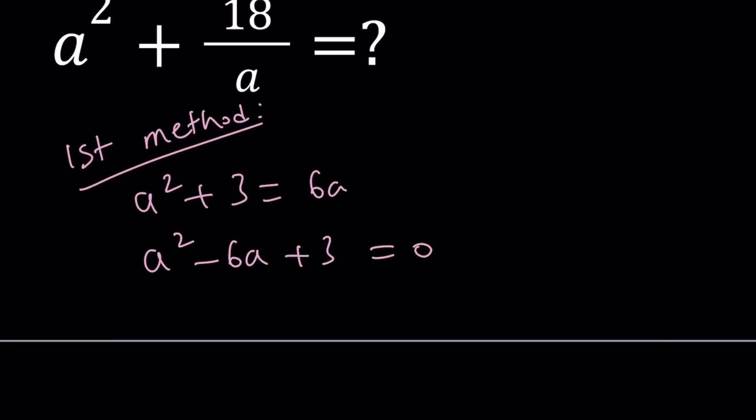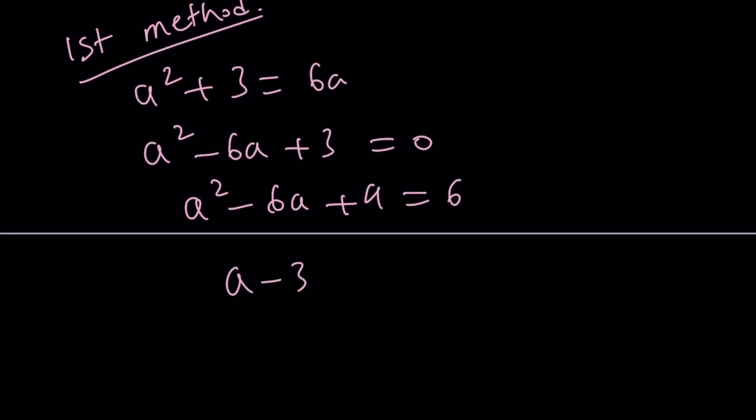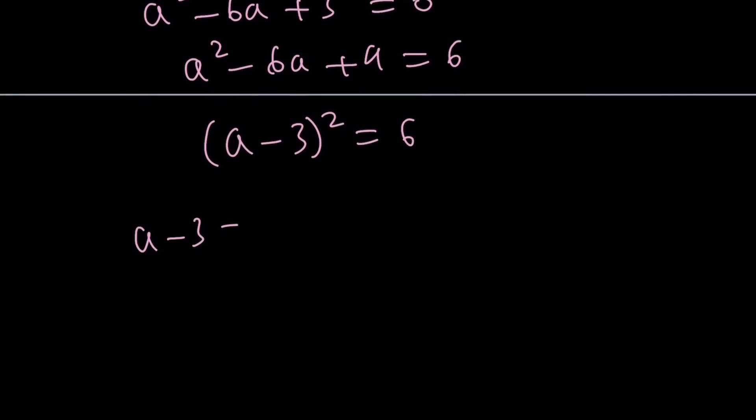And then write this. If you want to use the quadratic formula, write it as a squared minus 6a plus 9 equals 6. I kind of subtracted 3 and then added 9 to both sides or just added 6 to both sides. And I got a perfect square. And then I square root both sides. I get this and that. And then I add 3 to both sides. I get this and that. So those are the a values.